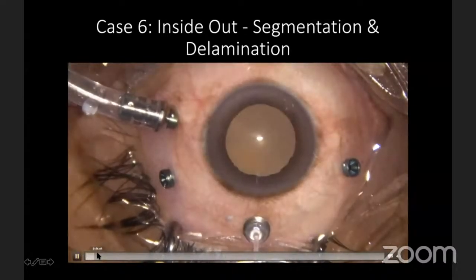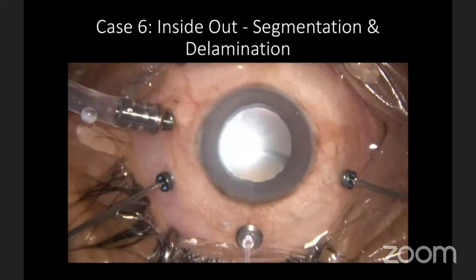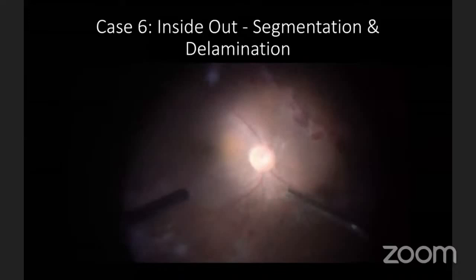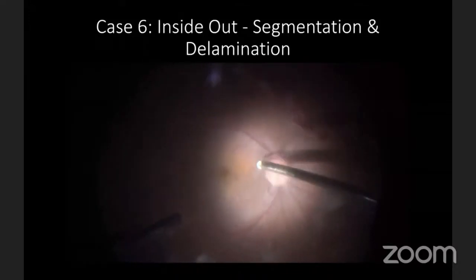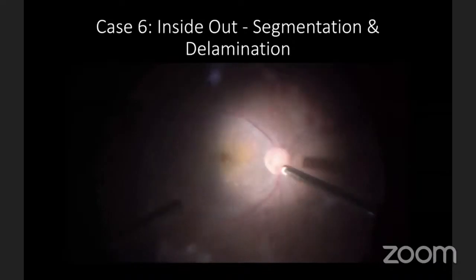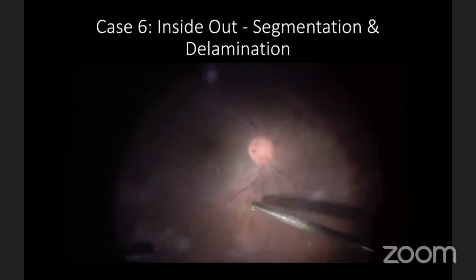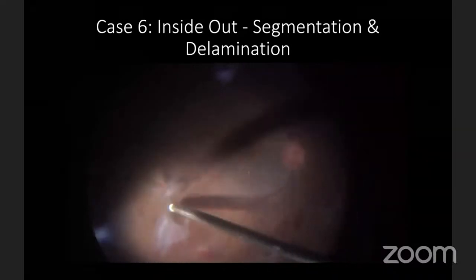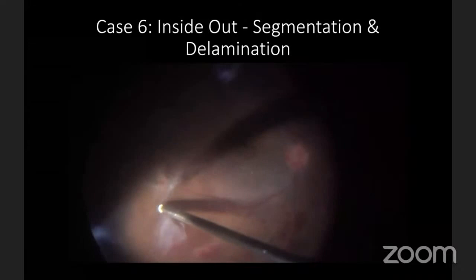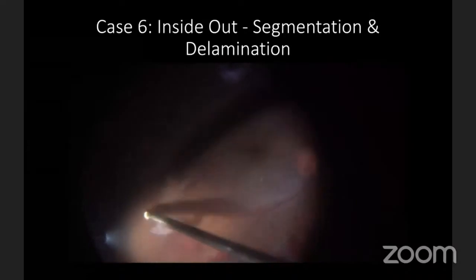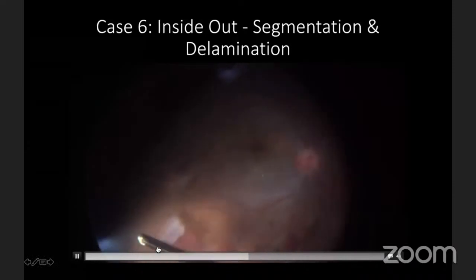This is the basic setup with standard three ports and the chandelier inserted, which can be placed superiorly, inferiorly, or as a dual chandelier for uniform illumination. I'm inducing the inside-out approach, separating the posterior cortex from the disc, then going into the periphery to gently lift up the tabletop configuration of fibrovascular proliferation. Once some separation is achieved, I cause segmentation — dissecting between two fibrovascular proliferations on the superior temporal aspect — then delaminating each proliferation to complete the dissection.